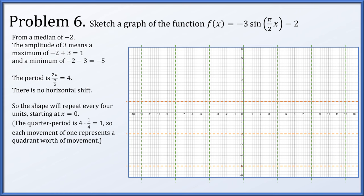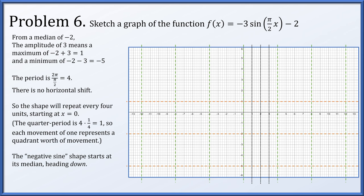I then like to mark off quarter periods within one of these periods. The period is length 4, so a quarter of that is 1. Within one period, I mark off segments of width 1, representing a single quadrant's worth of movement. We have a negative number times a sine function. The sine function begins at its median and goes up, but due to the vertical reflection, we start at our median and go down. Starting at x = 0 at the median value of -2: in the first quadrant we go down to the minimum, then come back to the median, go up to the maximum, and finally back down to the median. We then repeat this shape as needed.